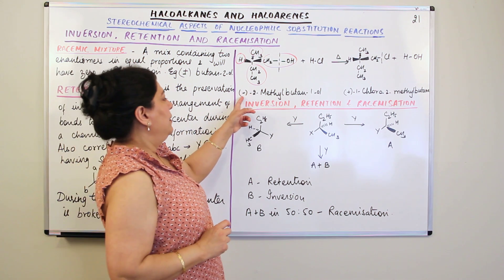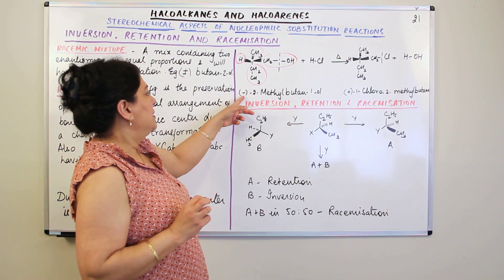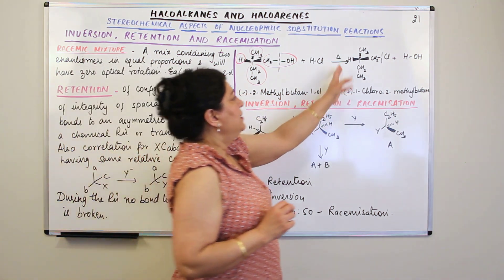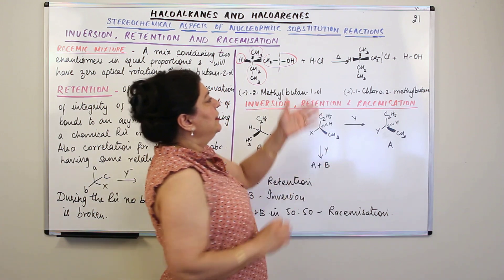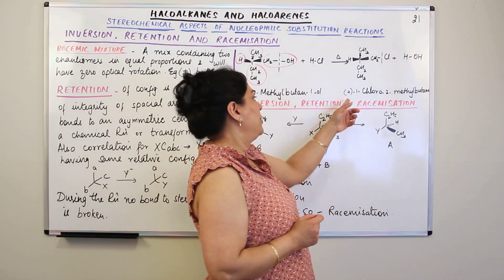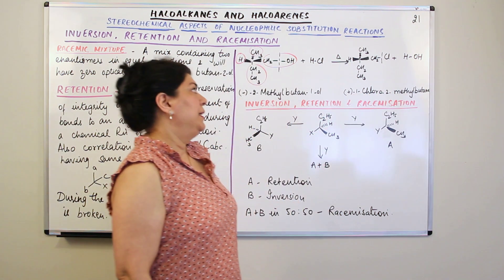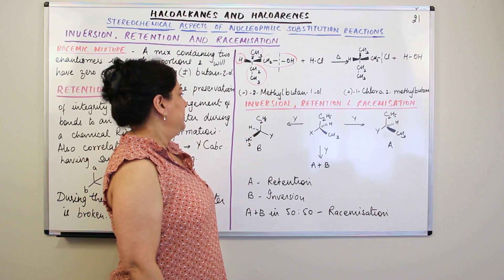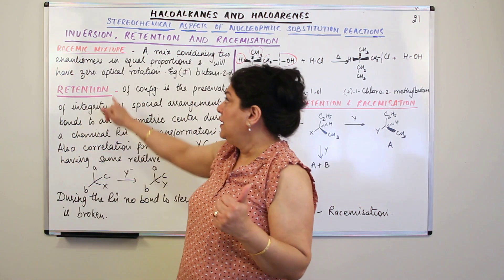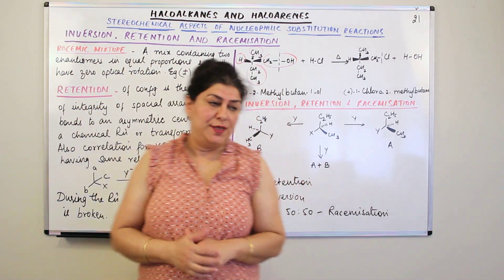So the example here is (−)-2-methylbutan-1-ol reacting to give 1-chloro-2-methylbutane. No bond to the stereocenter was broken, and therefore the configuration was retained. We now understand what a racemic mixture is and what retention is.